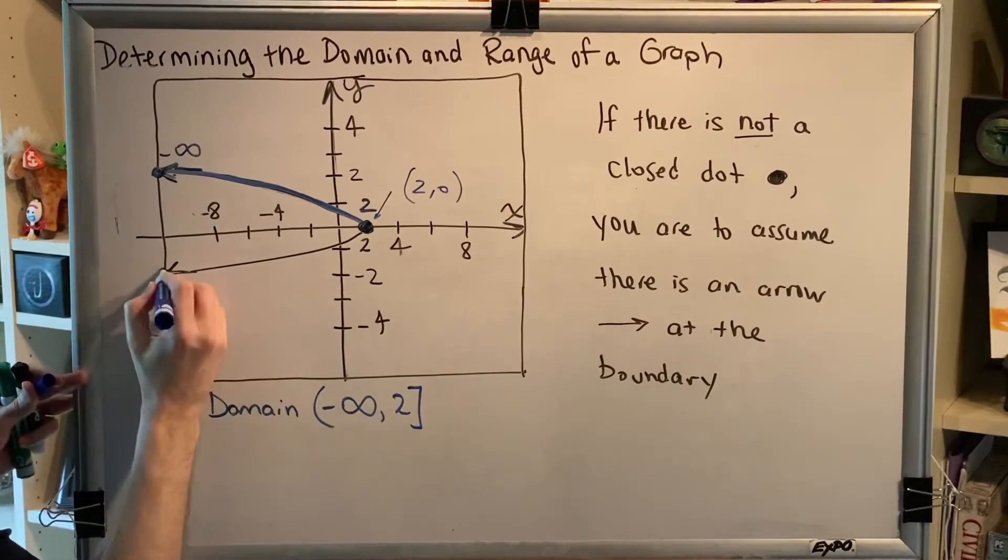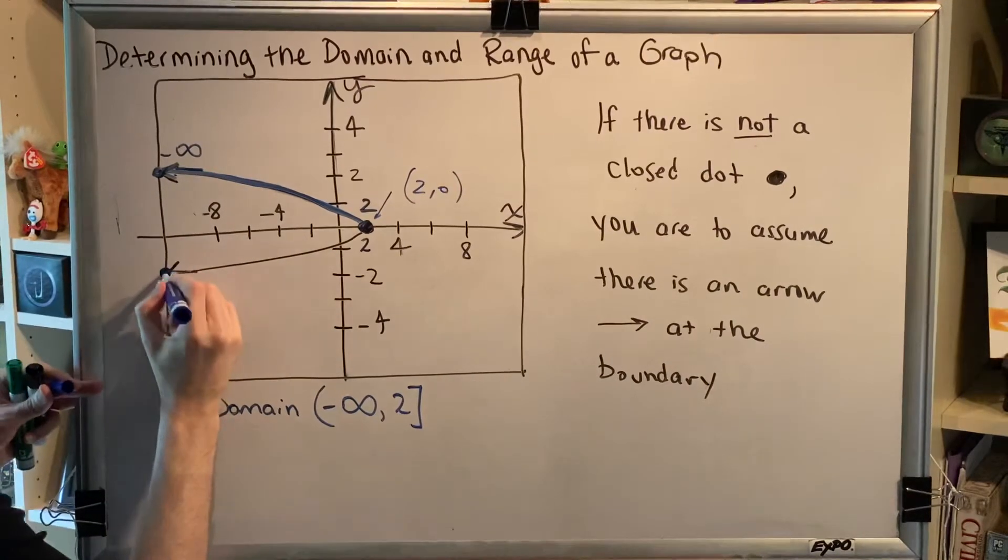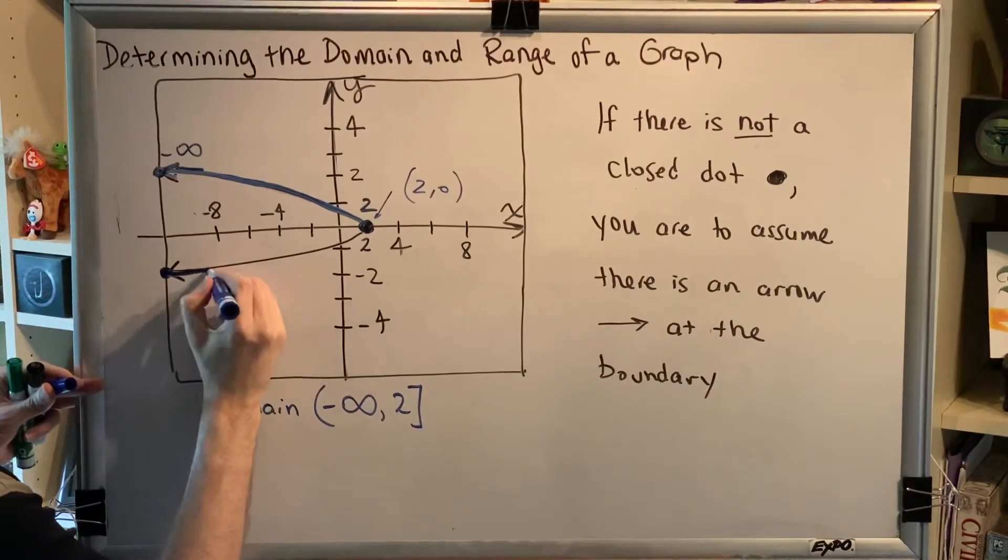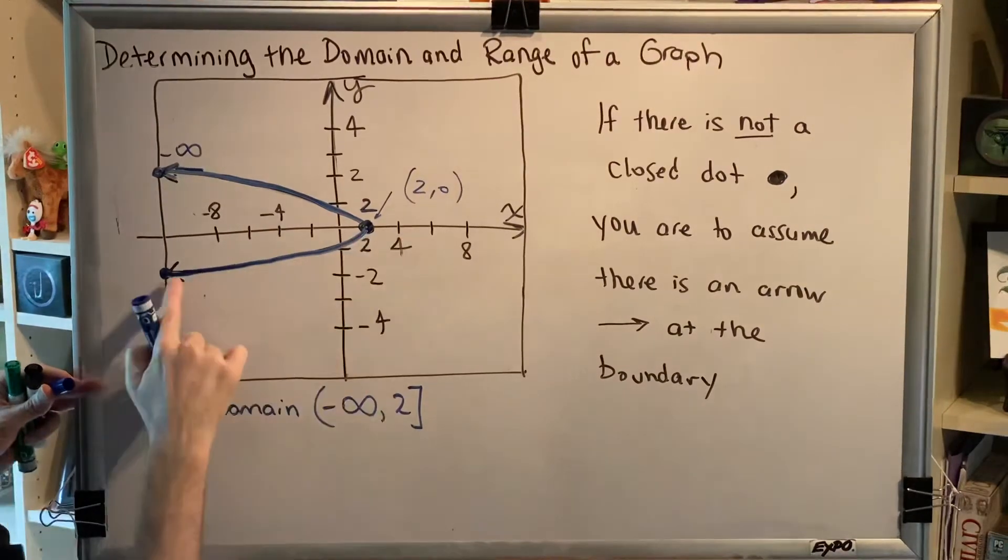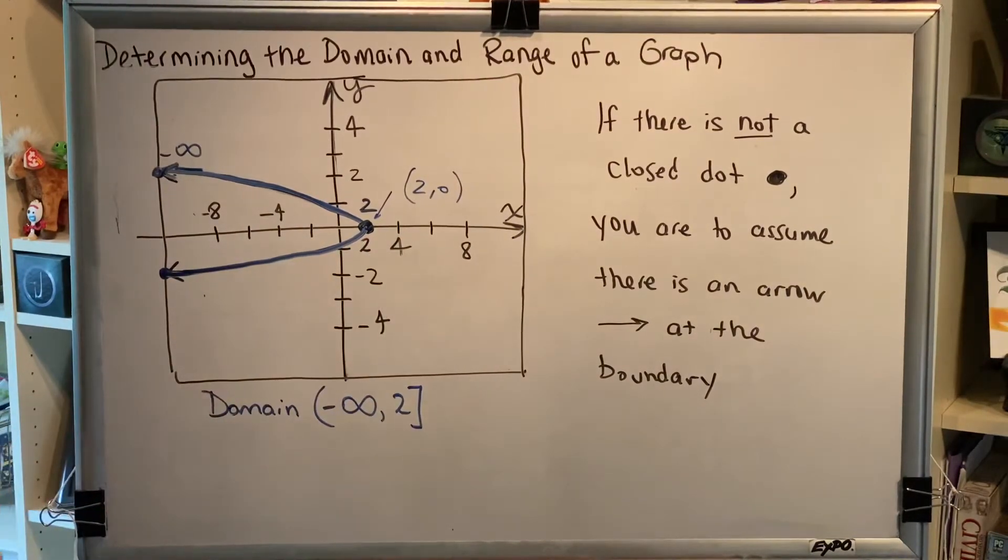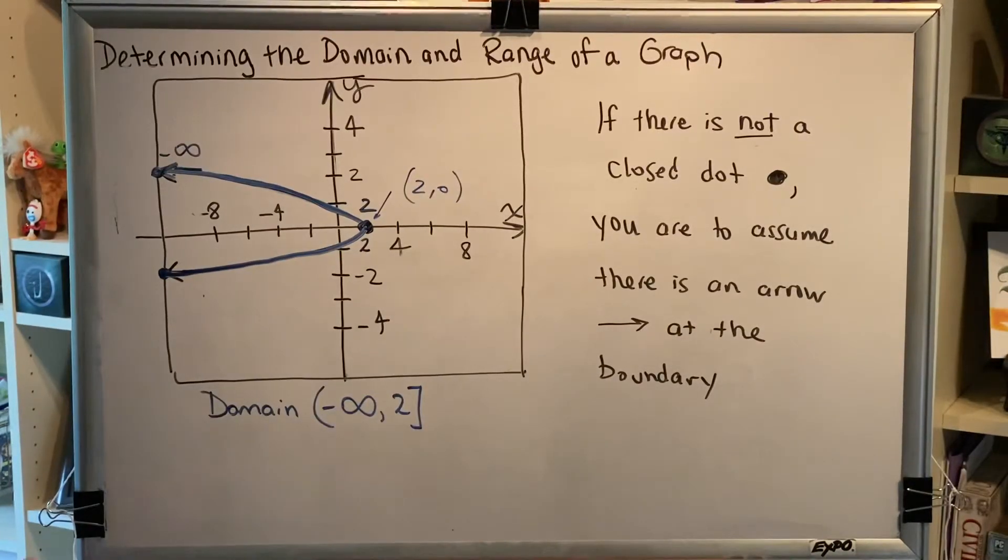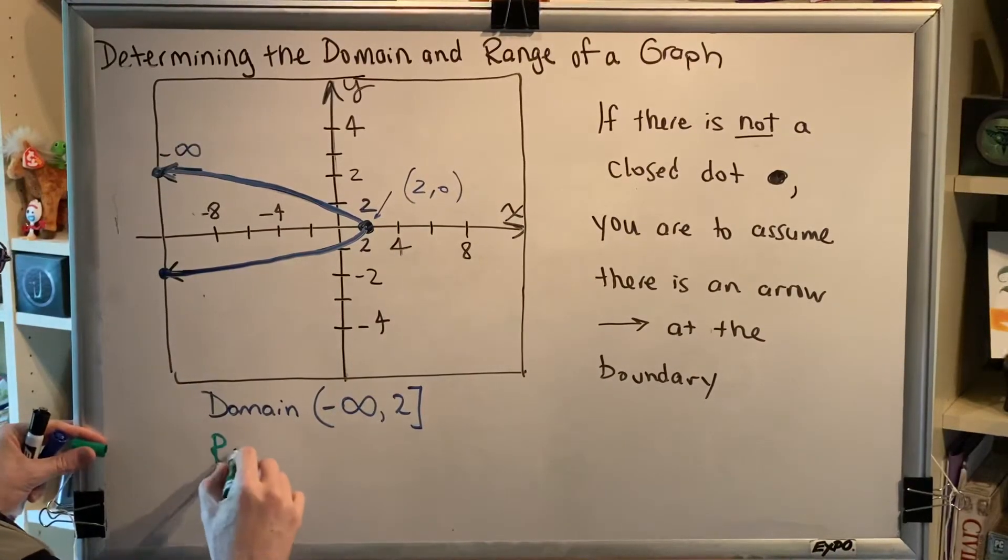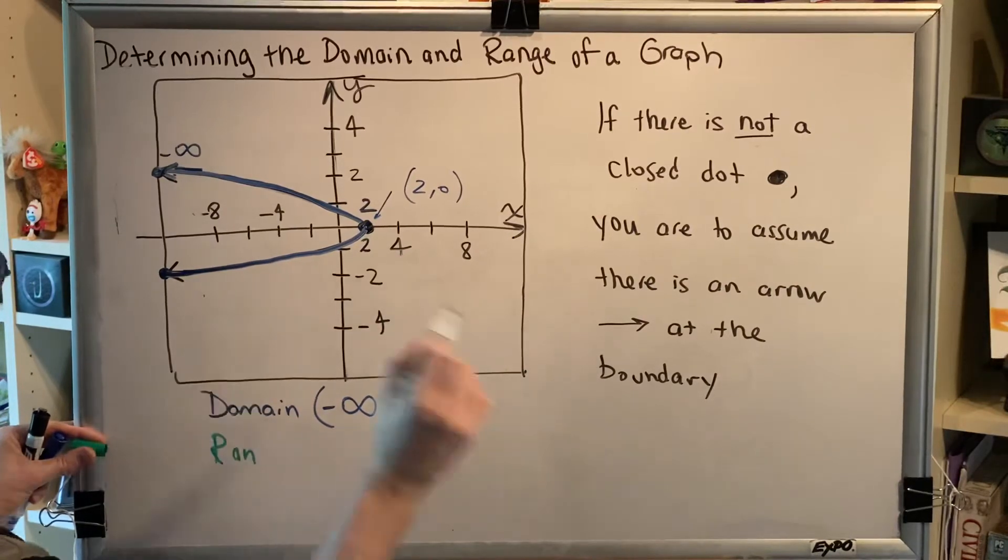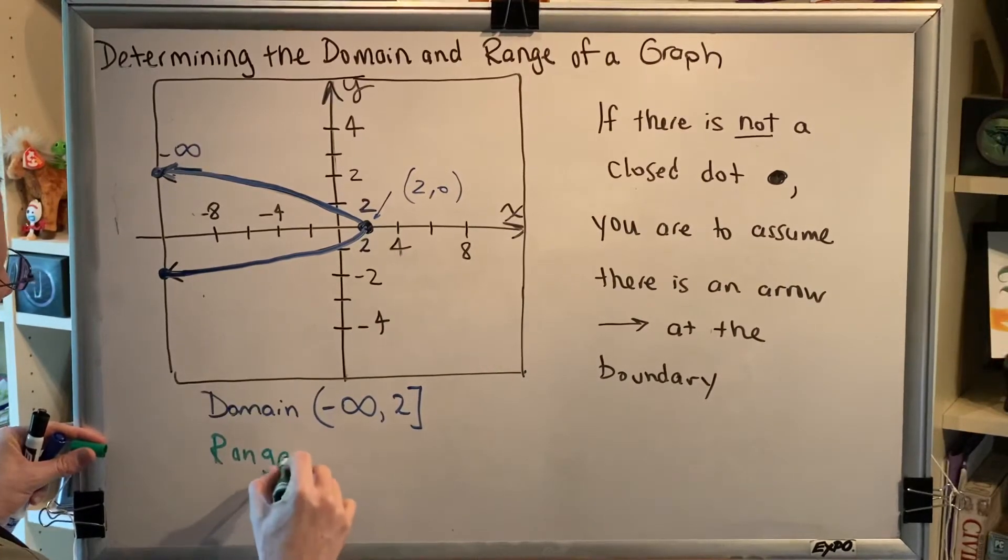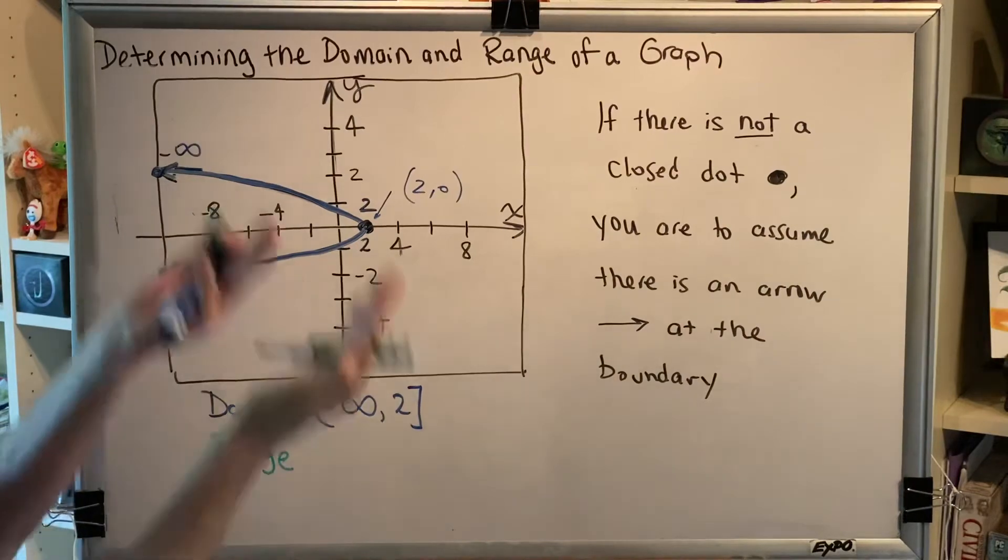If I were to have used the bottom wing of this graph, I would have gotten the exact same result because I would still be going from negative infinity all the way to positive 2. All right, now it's time to turn our attention to the range. Well, if domain measures left to right, then range needs to measure down to up.